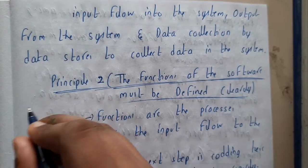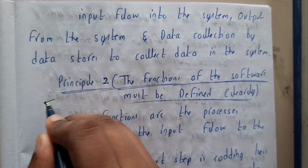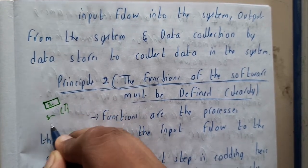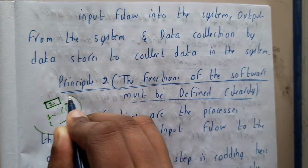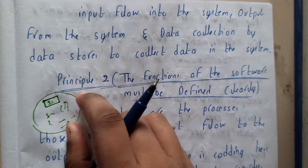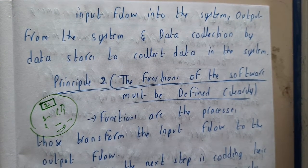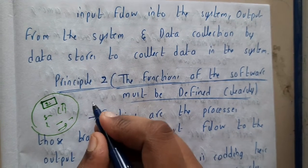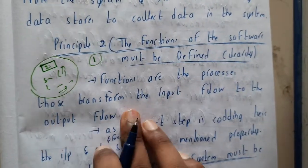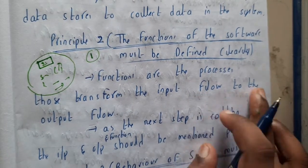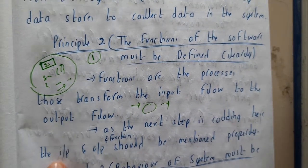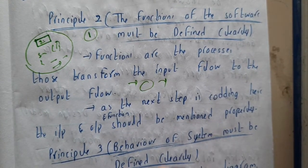Principle two: the function of the software must be defined clearly. In the analysis phase, you should analyze each and every function. For example, a function to draw a square — what are the parameters, what will it return, whether it will print — everything should be 100% clear, because after this you go directly to the design phase. For each module you will have a UML diagram. Functions transfer input flow to output flow, taking some input and generating or storing output. The input and output of functions should be mentioned properly and clearly.